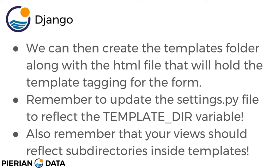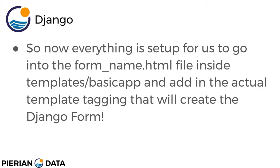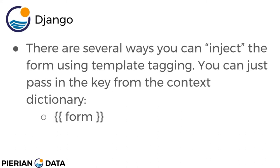Remember to update the settings.py file to reflect the new template directory variable — we did that in Django level 1. Also remember that your views should reflect subdirectories inside templates. Once everything is set up, you go into the form HTML file (usually placed inside your templates folder, then the subdirectory of your application), and add the template tagging that will create the Django form. You can inject the form by just passing in the key from the context dictionary in double curly brackets.